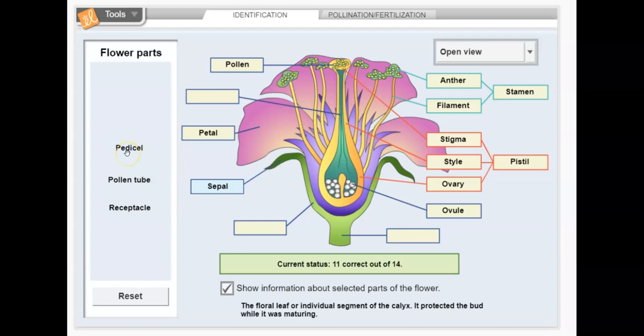Pedicel, I should say. I think that's this one. Yep. A small stalk bearing a single flower. Receptacle, I think is this one. It's the flat concave or convex part of the stem from which all parts of the flower arise. It's like the cup that holds the flower. And then last but not least, we have the pollen tube, which is the slender tube that grows from a pollen grain, penetrates the ovule and releases male gametes.